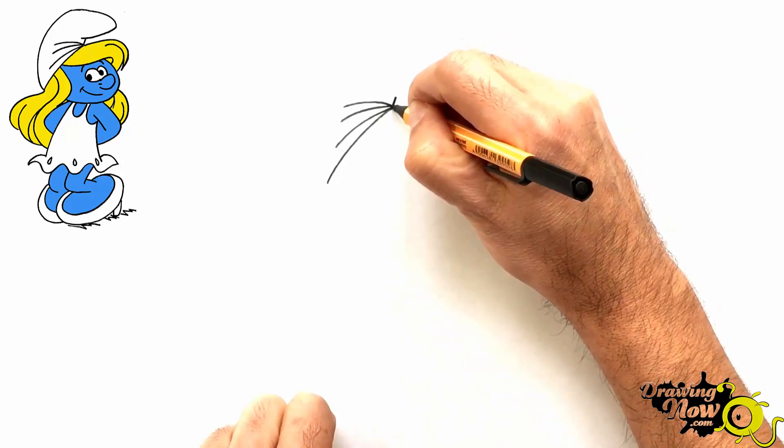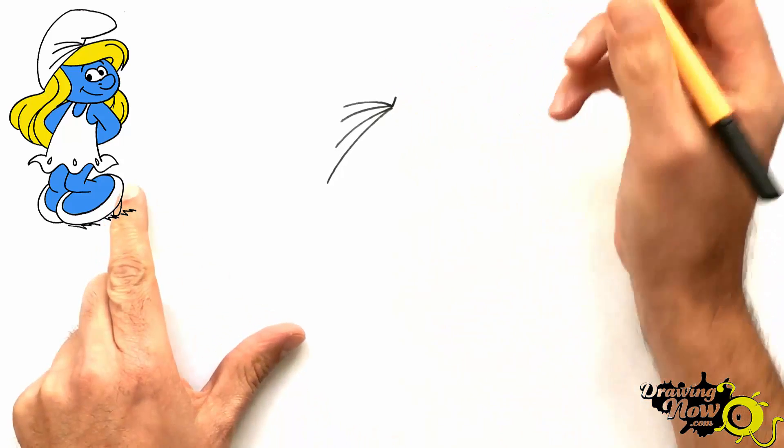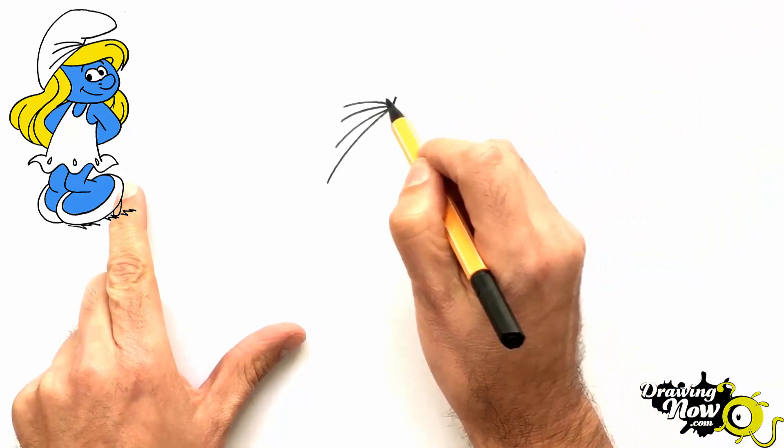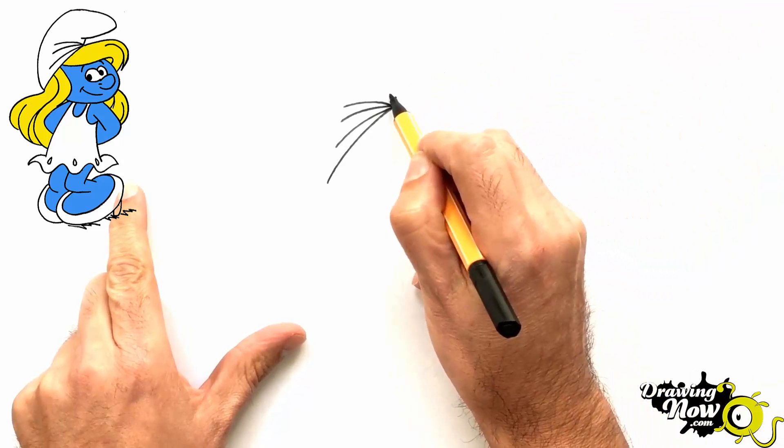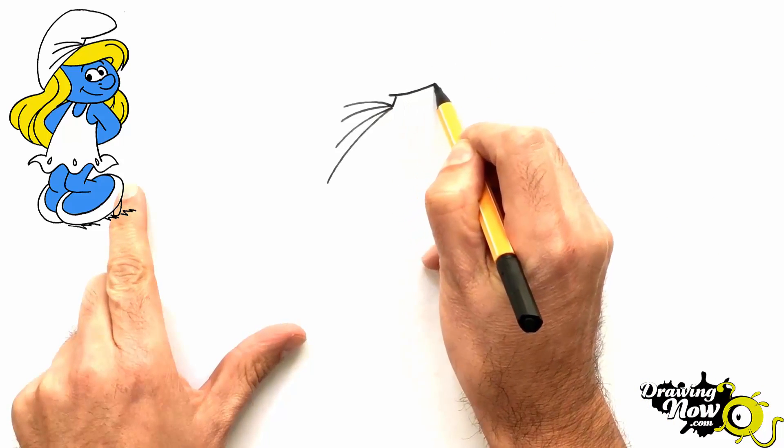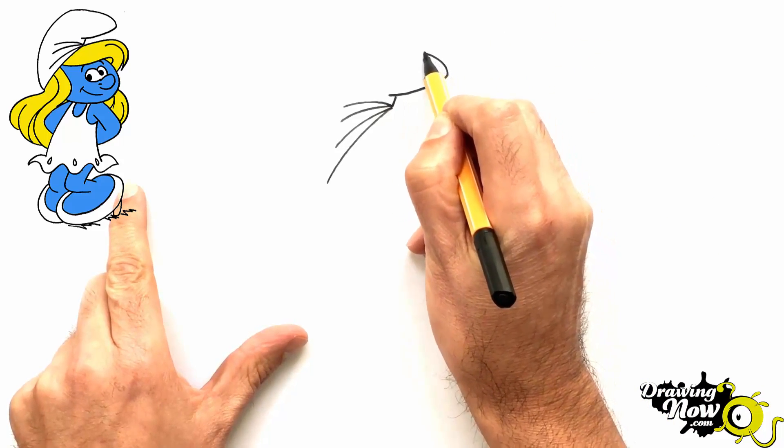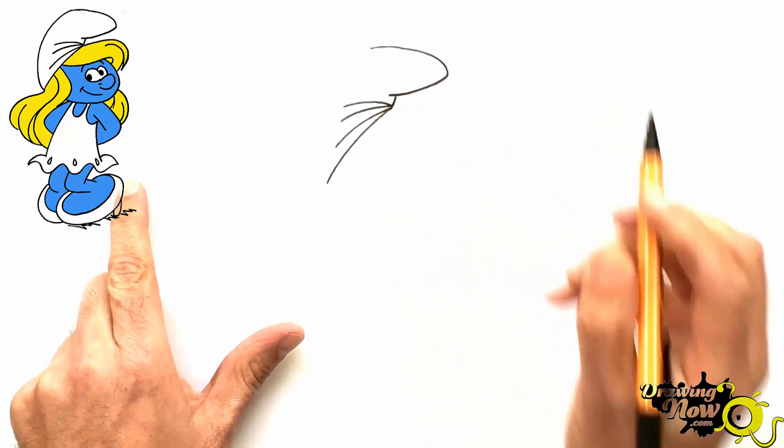Then you do a smaller line like this, up there. And now what we do, we do the hat, so kind of a pointy, and then you come back like that.